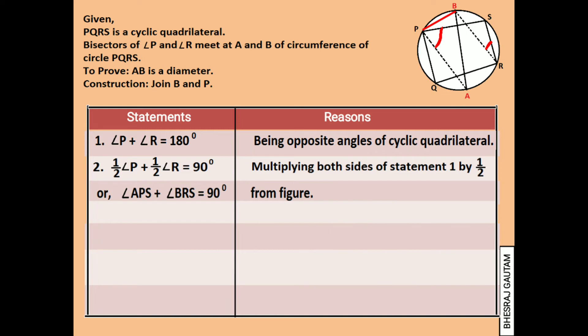As we have learned that inscribed angles standing on the same arc are equal, we can now say that angle BRS is equal to angle BPS since both of these angles are standing on the same arc. As statement 3 says angle BRS is equal to angle BPS.